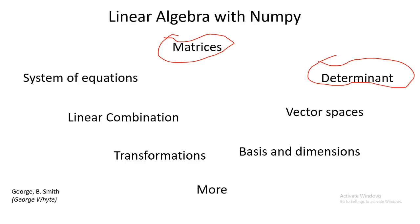Now, why do we study linear algebra? Since I'm pairing it with Python and NumPy, many of you watching may be taking courses in data science or machine learning. Linear algebra is one field in mathematics that is very versatile — it is applied in statistics, in multivariate analysis, in stochastic processes, which is also used in reinforcement learning, which is a branch under machine learning.